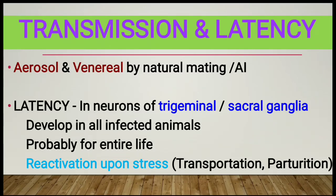Regarding transmission and latency, this disease is mainly transmitted by aerosol and venereal route through natural mating or AI procedures. Latency of the virus occurs in neurons of the trigeminal and sacral ganglia, which develops in all infected animals, probably for their entire life. Reactivation upon stress can occur during transportation and the parturition period.